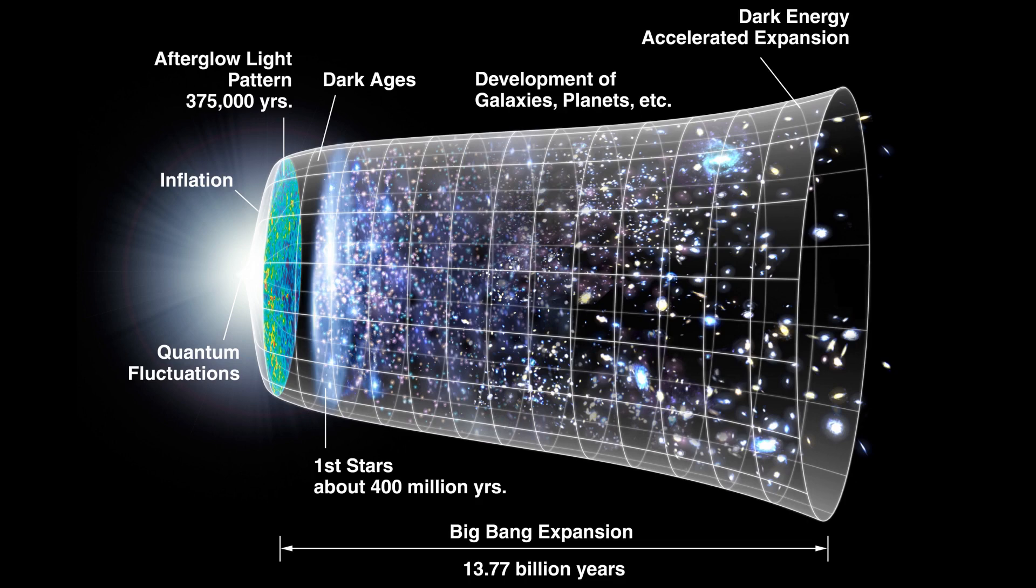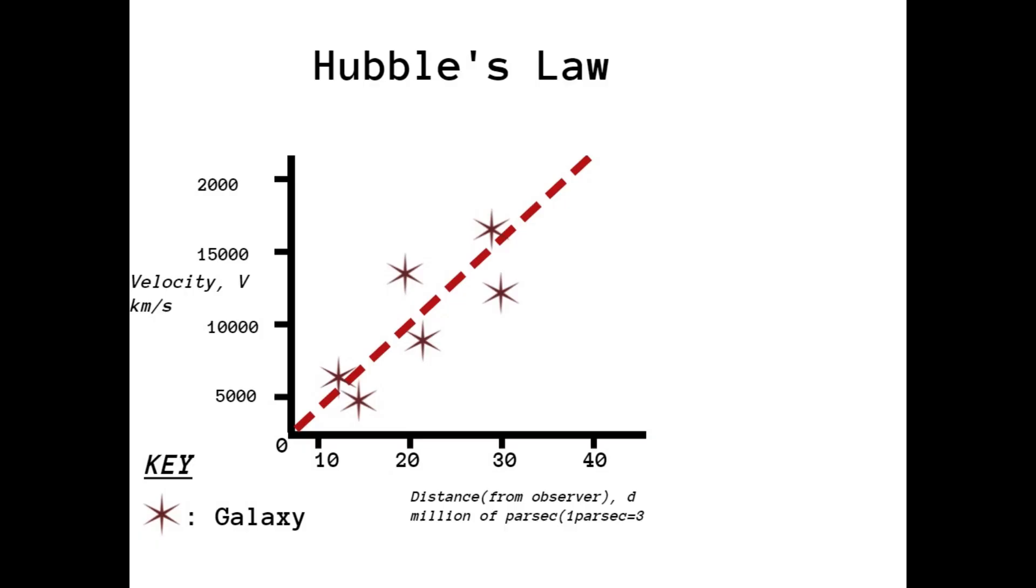Another important aspect of his discovery was that he observed the galaxies that were farther away from him were moving at greater velocities away from him, which meant that they were showing greater redshift.